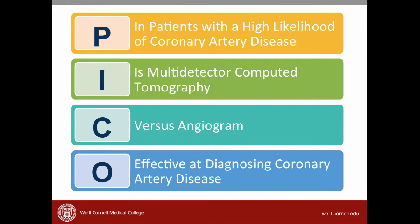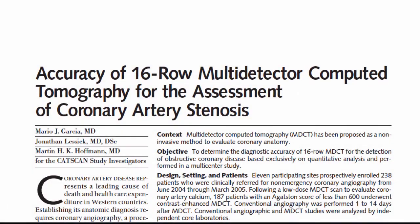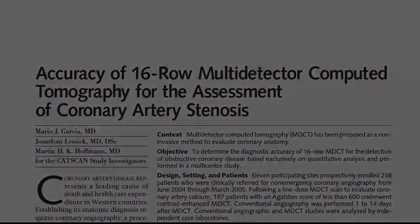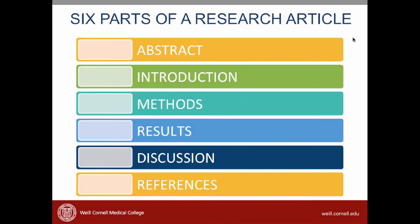You advise him that you'd like to do a little more research on coronary CAT scans and you'll get back to him with advice. Before you search the literature, you develop the following PICO question: In patients with a high likelihood of coronary artery disease, is multi-detector CT versus angiogram effective at diagnosing coronary artery disease? Using this PICO question, you use the TRIP database to find an article published in the Journal of the American Medical Association that you think will answer this question. A copy of the article is in Canvas. Feel free to read it now or refer back to it as we go through this video and the next few videos.